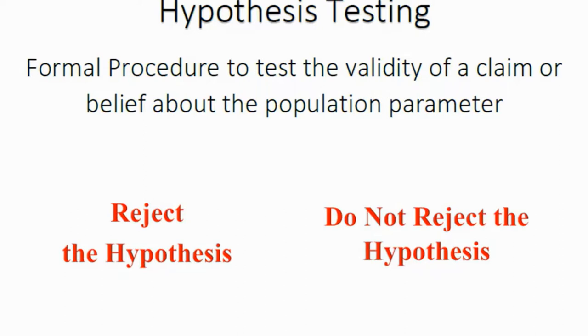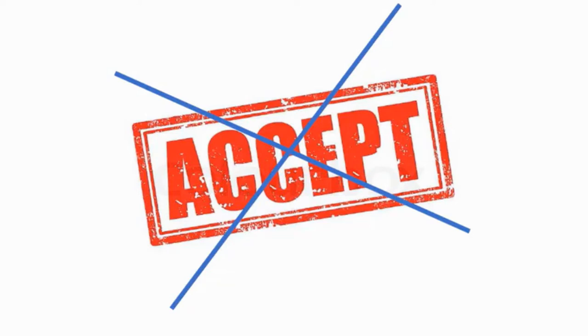We undertake a process of hypothesis testing — a formal procedure to test the validity of the claim or belief about the value of a population parameter. When we're done, we draw one of two conclusions: either our data was sufficiently strong to reject the hypothesis, or our data presented insufficient evidence and we will fail to reject — we do not reject — the hypothesis.